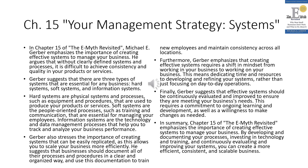Chapter 15: Your Management Strategy — Systems. In chapter 15, Michael E. Gerber emphasizes the importance of creating effective systems to manage your business. He argues that without clearly defined systems and processes, it is difficult to achieve consistency and quality in your products or services. Gerber suggests that there are three types of systems essential for any business: hard systems — physical systems and processes such as equipment and procedures used to produce your products or services; soft systems — people-oriented processes such as training and communication; and information systems — technology and data management processes that help you track and analyze business performance.